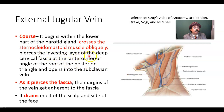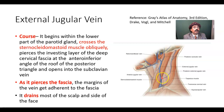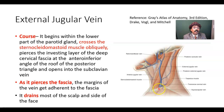It pierces the investing layer of the deep cervical fascia at the anterior inferior angle of the roof of the posterior triangle. Just along the posterior border of the sternocleidomastoid muscle as it pierces the fascia, the margins of the vein get adherent to the fascia.